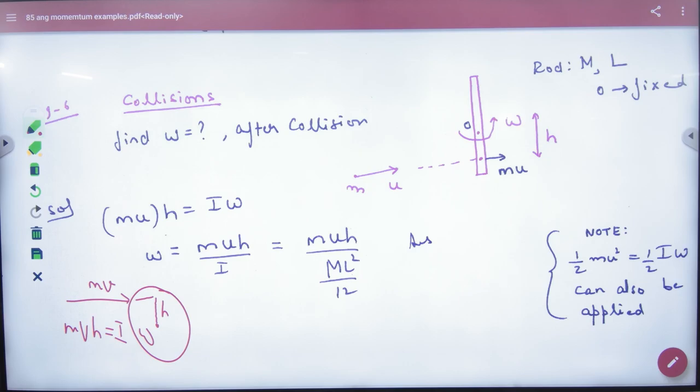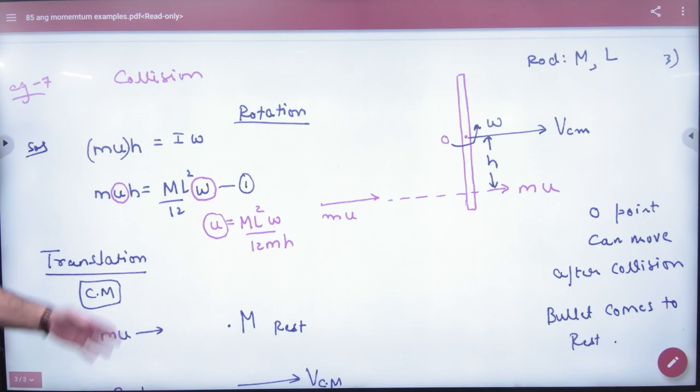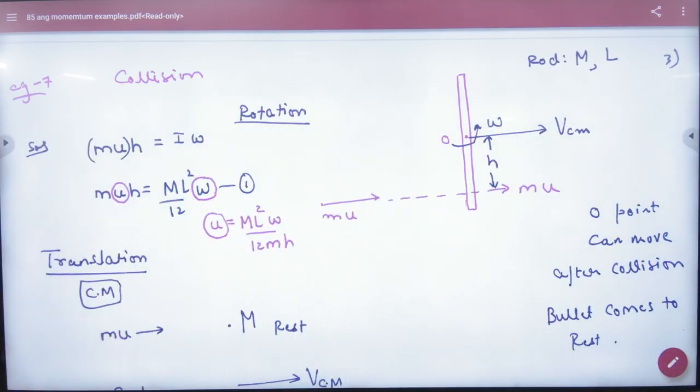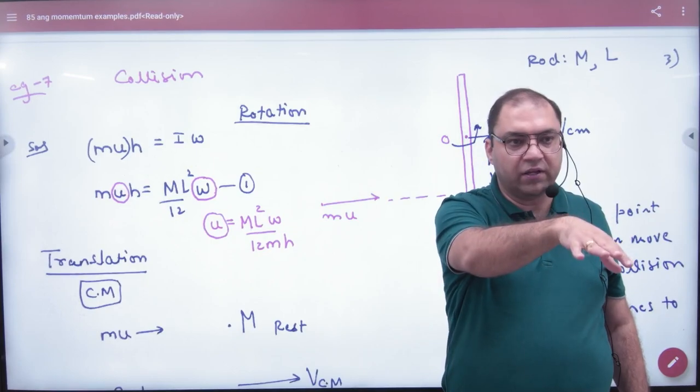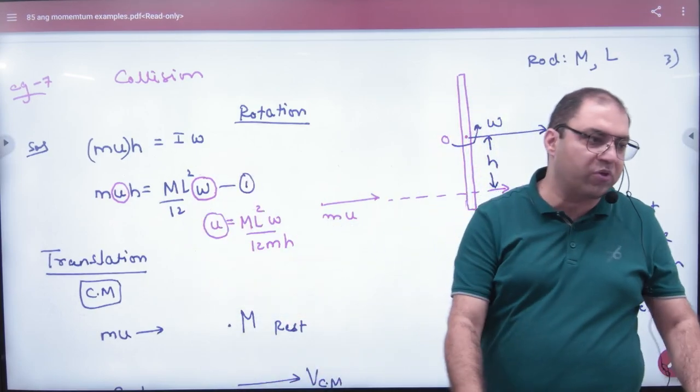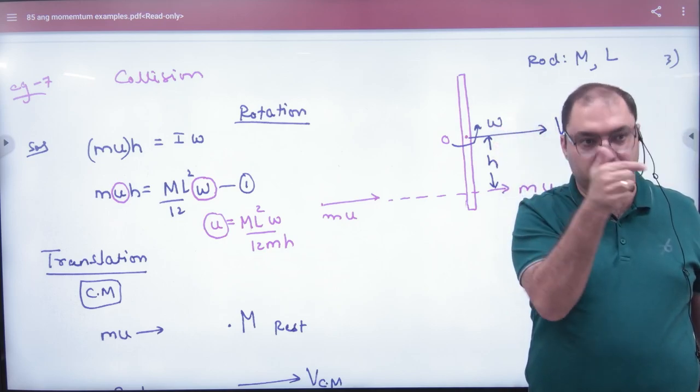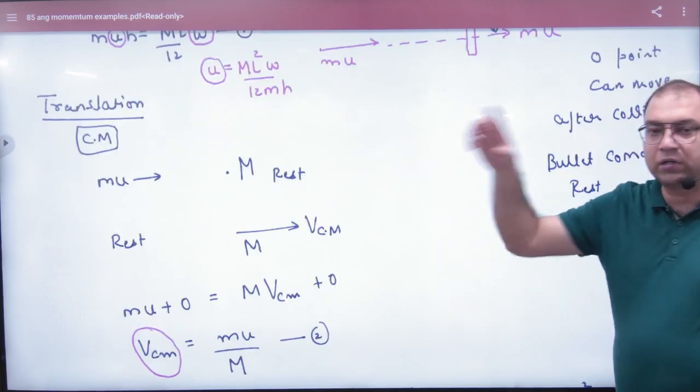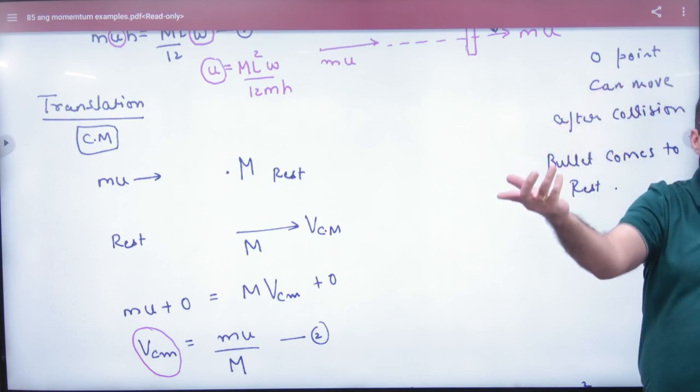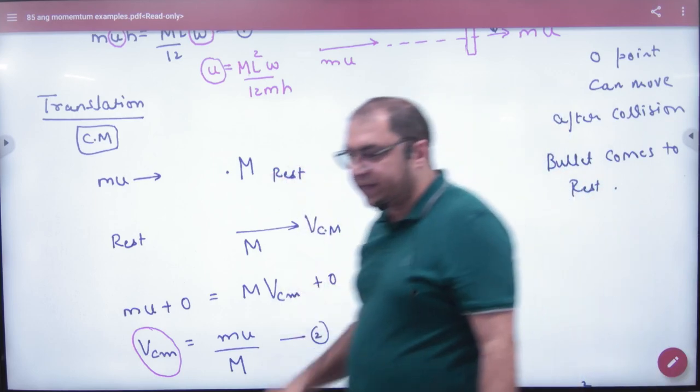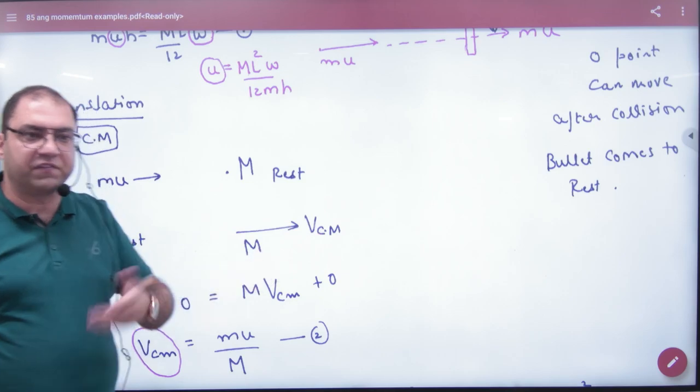Second case: the rod is not hinged. This is going further with the velocity of center of mass because center of mass will also move. Rule number one is translation motion will occur. Apply translation motion equation for center of mass. If we are doing center of mass, then rod moves with velocity of the center of mass.